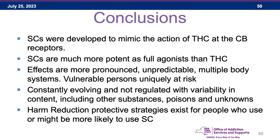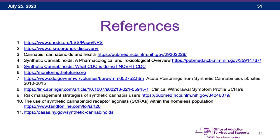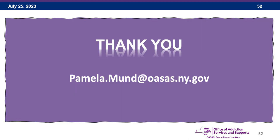In conclusion: Synthetic cannabinoids were developed to mimic the action of THC at the cannabinoid receptors, but are much more potent as full agonists. Their effects are more pronounced and unpredictable, affecting multiple body systems. Vulnerable persons are uniquely at risk for adverse events. These substances are constantly evolving and unregulated, with variability in content including the presence of other substances, poisons, and unknowns. There are many harm reduction strategies that should be promoted for people who use or are likely to use synthetic cannabinoids.